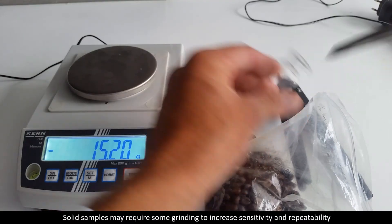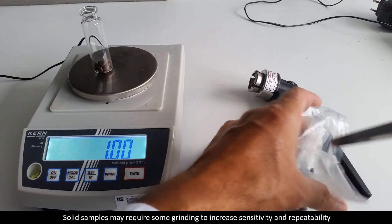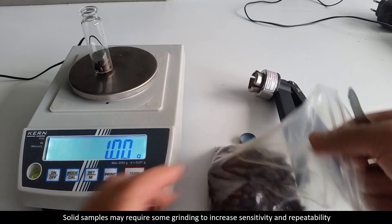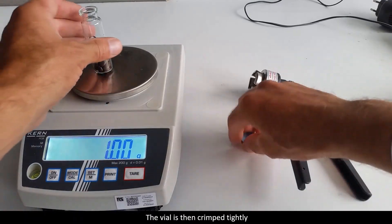Solid samples may require some grinding to increase sensitivity and repeatability. The vial is then crimped tightly.